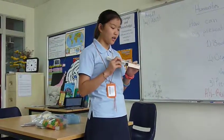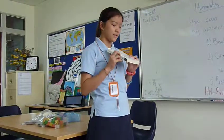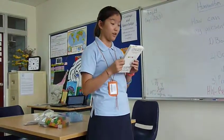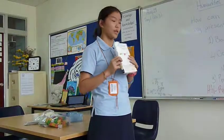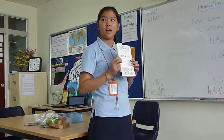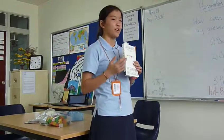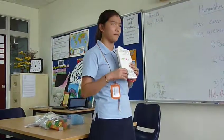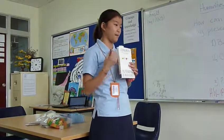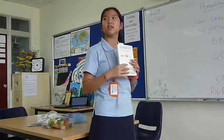This book is called An Abundance of Katherines by John Green. The genre is realistic fiction. I have read other books from him like The Fault in Our Stars and Paper Towns.